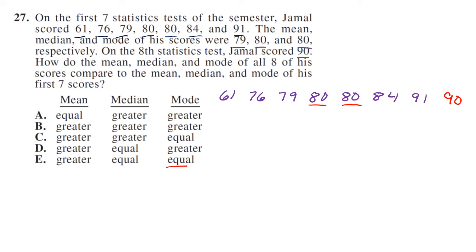Well, the mode doesn't change. The most common number is still 80, so that's going to be equal. So it has to be either choice C or E. Now, the mean is greater, no matter which one. So is the median greater or equal? In an even set of numbers, it's going to be the average of the two middle numbers, which are both 80. So 80 is still the median, so it's going to be equal. So your answer is E.